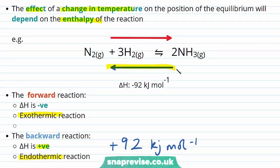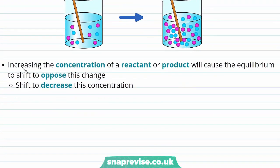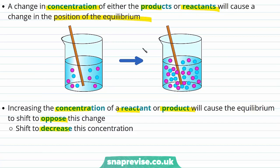A change in the concentration of either products or reactants will cause a change in the position of equilibrium. Increasing the concentration of a reactant or product causes the equilibrium to shift to oppose this change — it will shift to decrease that concentration. So if we increase the concentration of a product, the system moves towards the reactants; if we increase the concentration of reactants, the system moves towards the products.